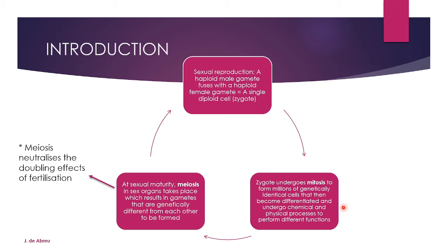Meiosis does not form identical cells. These millions of identical cells become differentiated — some become arm tissue, some become muscle tissue — by undergoing chemical and physical processes so they can perform different functions. The zygote divides, cells differentiate, and a baby is formed. This baby is born, grows up, and when it reaches puberty it reaches sexual maturity. Then in this person's sex organs, meiosis takes place.